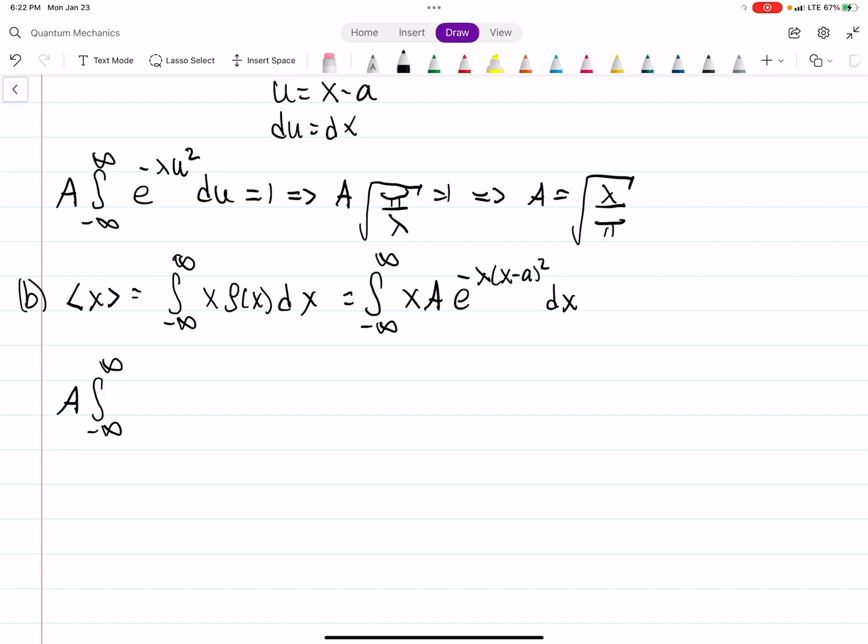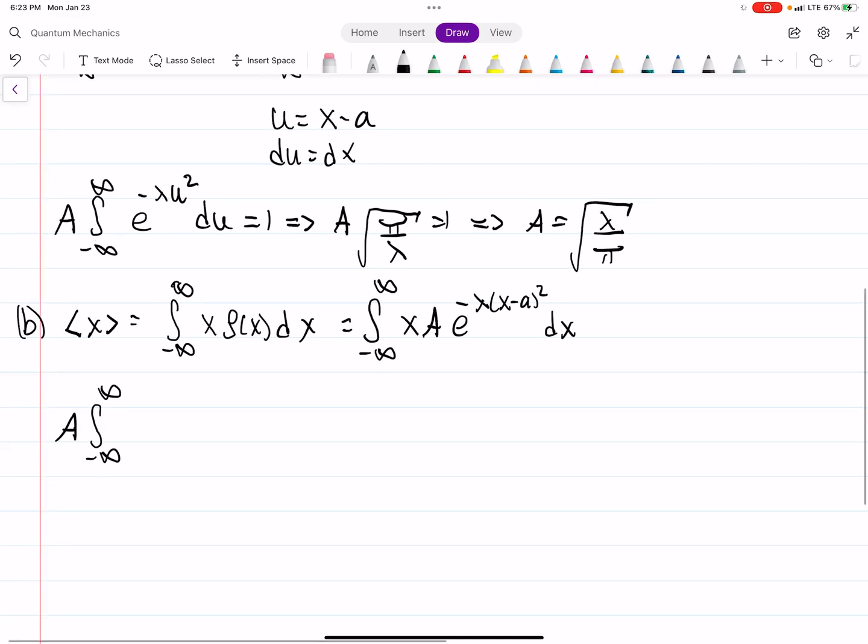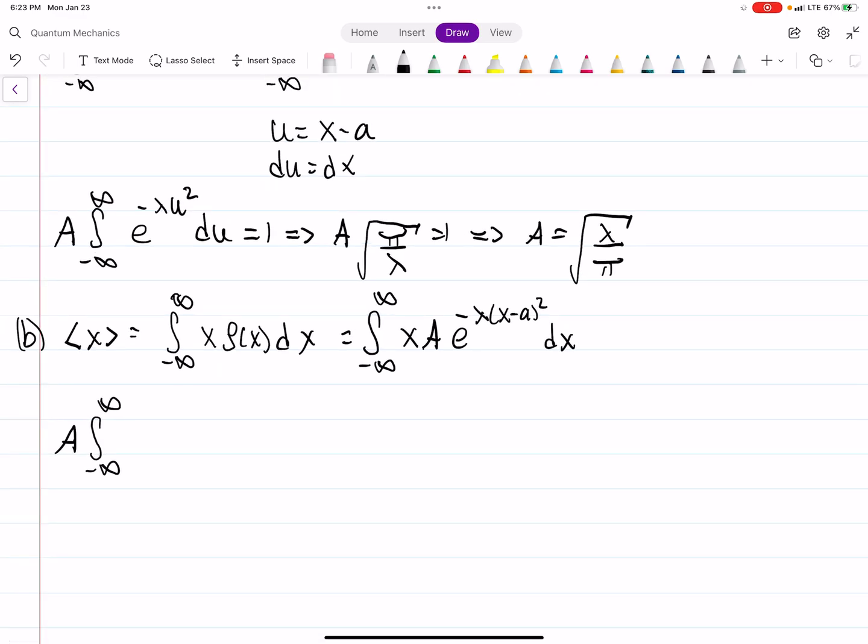And once we factor out our A, we can also use our substitution here. So we can use the same substitution as before. And then just note, so same U sub. So if I go here, right, you can see that x is equal to U plus A.